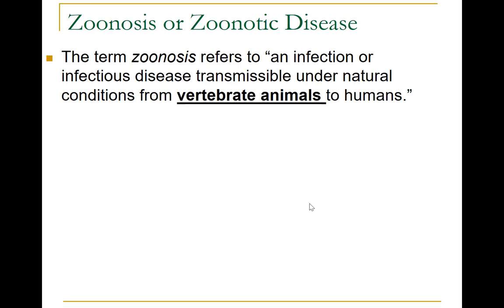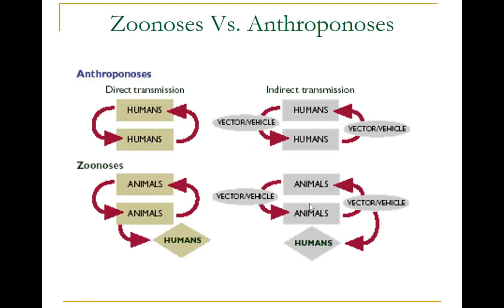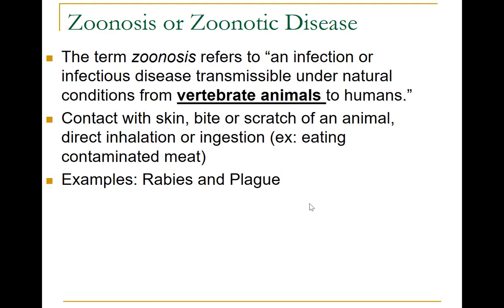The term zoonosis refers to an infectious disease that is transmissible under natural conditions from vertebrate animals to humans. Contact with the skin, bite or scratch of an animal, direct inhalation, or ingestion of contaminated meat can lead to zoonotic diseases. Long-recognized zoonotic diseases include plague from rodents, anthrax from sheep, tularemia from rabbits, and rabies from bats, raccoons, dogs, and other mammals. Many newly recognized infectious diseases in humans — including HIV/AIDS, Ebola, and SARS — are thought to have emerged from animal hosts.